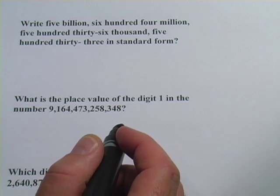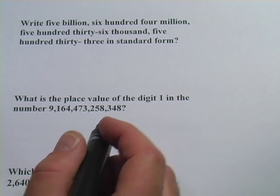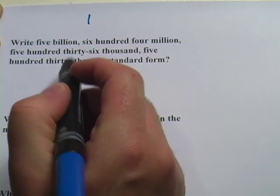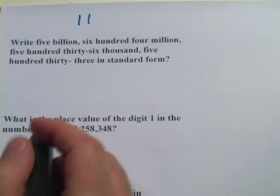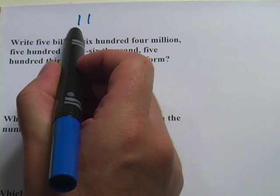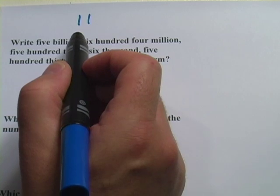These problems are about place value in how we write our numbers. And the way to think about this, you know, the number 1 has 1 in the 1's place. The number 11 has a 1 in the 1's place and a 1 in the 10's place. So it's really like 1 ten plus 1 one is 11, which kind of makes sense.